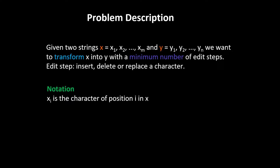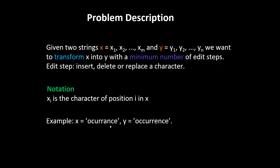The notation: xi is the character at position i in x. For a quick example, let's say we have two quite similar words — x is 'occurence' and y is 'occurrence'. After some thinking, we can see that if we insert a c in between the c and the u, and change this a into e, then the two strings will be equal. That's a total number of edit steps of two.